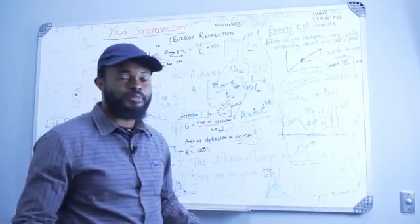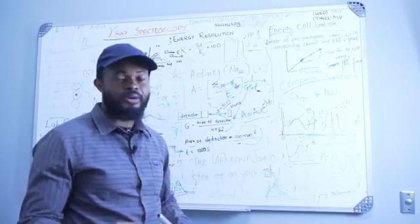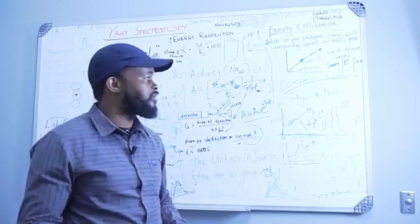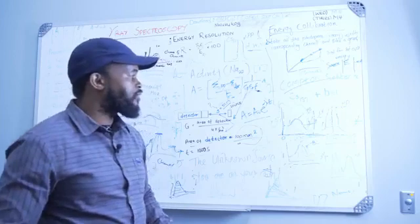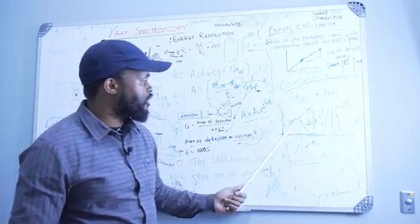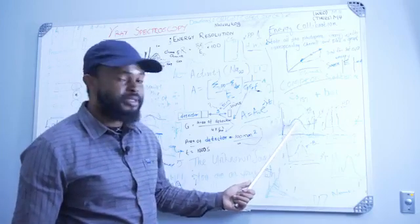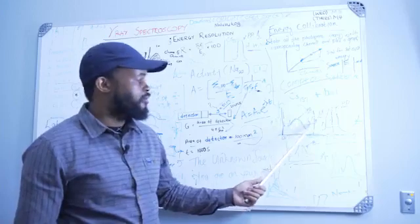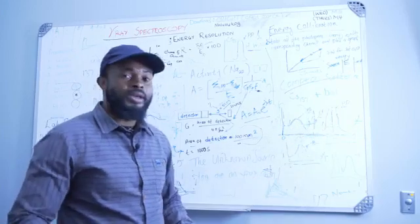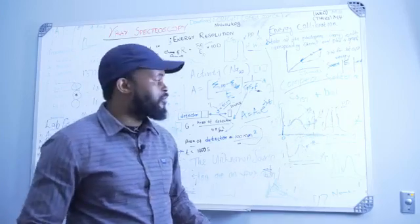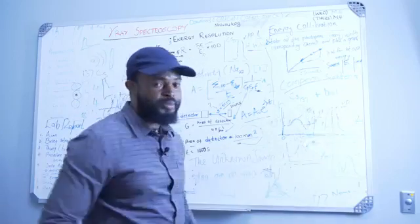You will plot the spectrum of Caesium-137, Cobalt-60, and Sodium-22. After plotting the spectrum, you are going to have three peaks: the backscatter peak, the Compton edge, and the photopeak. For energy calibration, you are only going to focus on the photopeak.